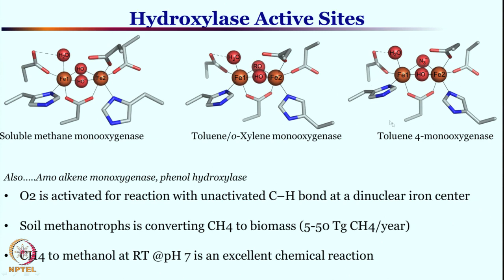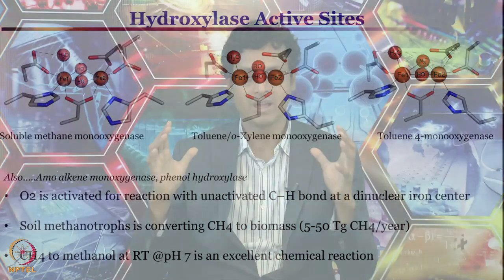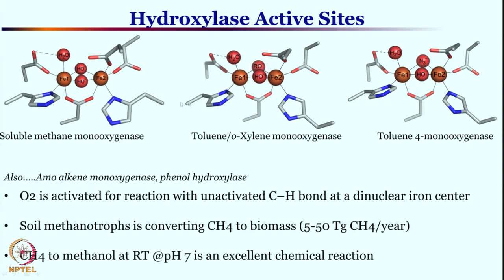This is the enzyme active site for toluene para-hydroxylation, or toluene 4-monooxygenase. Essentially, hydroxylases are a group of enzymes capable of hydroxylating organic substrates — it could be an aliphatic substrate or an aromatic substrate. The crystal structures of different monooxygenases show very little differences among them.